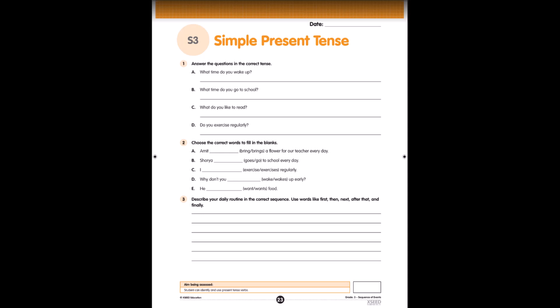Now, the second question. Choose the correct words to fill in the blanks. Amit dash a flower for our teacher every day. Bring or brings? What will be the answer? Amit brings a flower for our teacher every day because I told you along with third sentence singular we will be adding S or E-S with the base form of the verb. Next one, Shodya dashed to school every day. Goes or go. I dash regularly. Exercise, exercises. Why don't you dash up early? Wake or wakes. He dashed food. Want or wants. So choose the correct words and fill in the blanks.